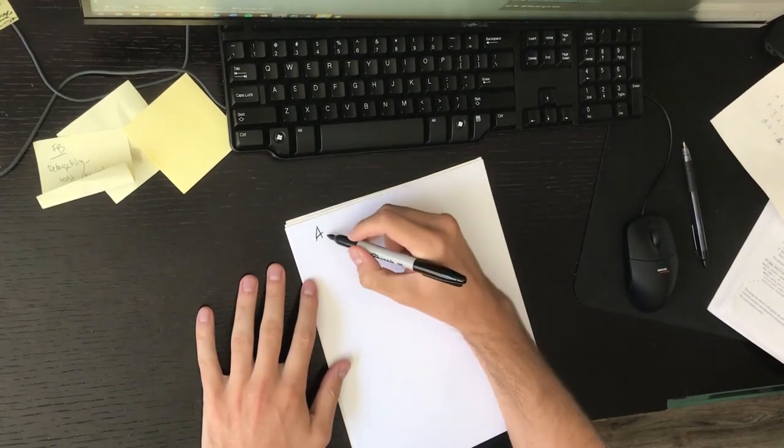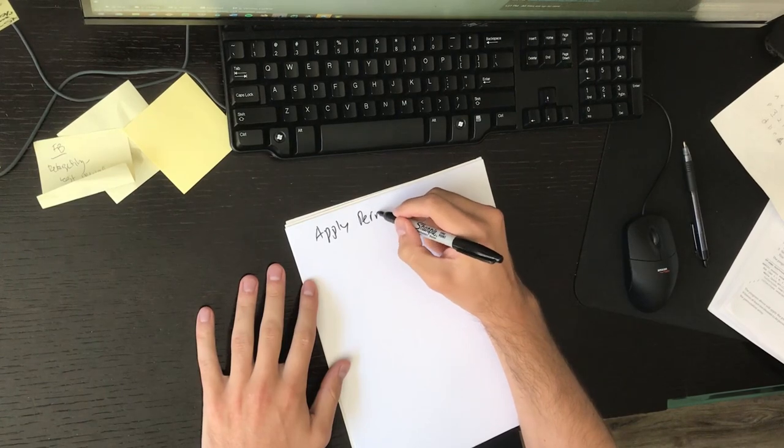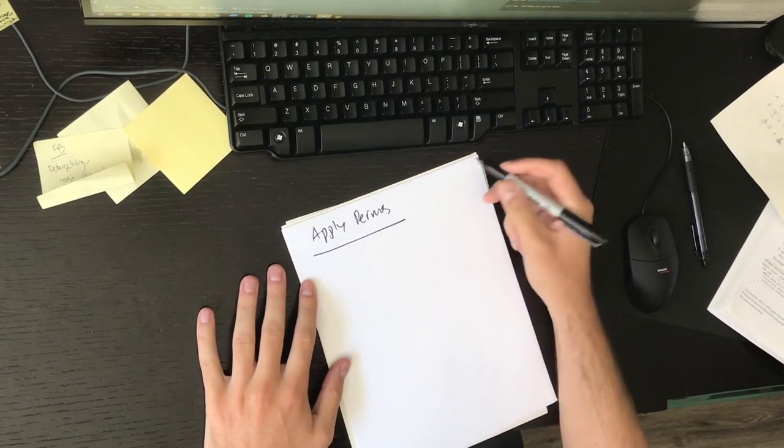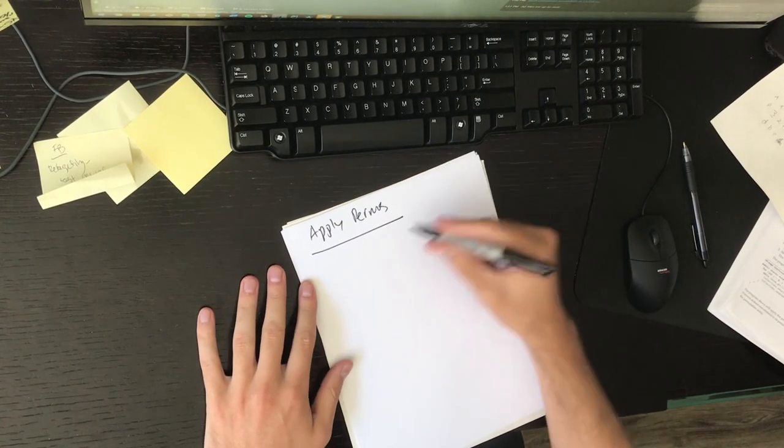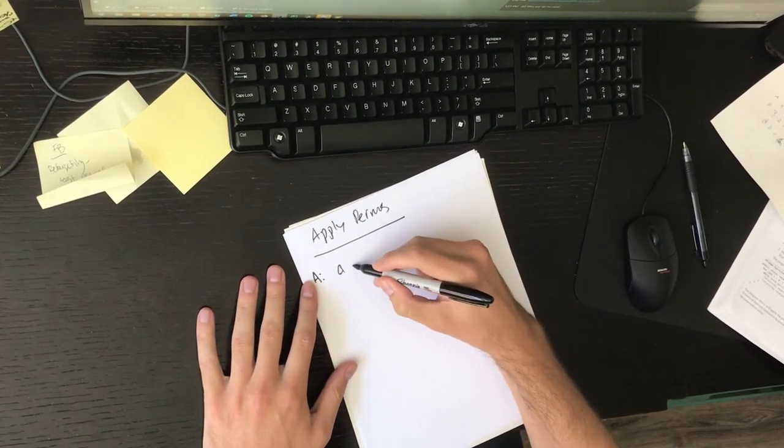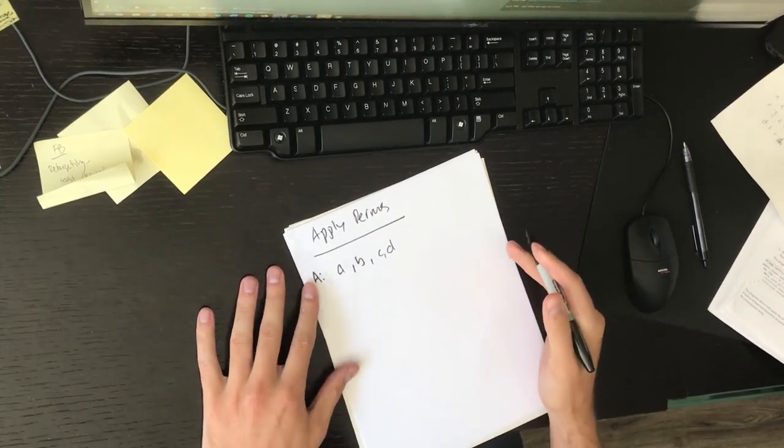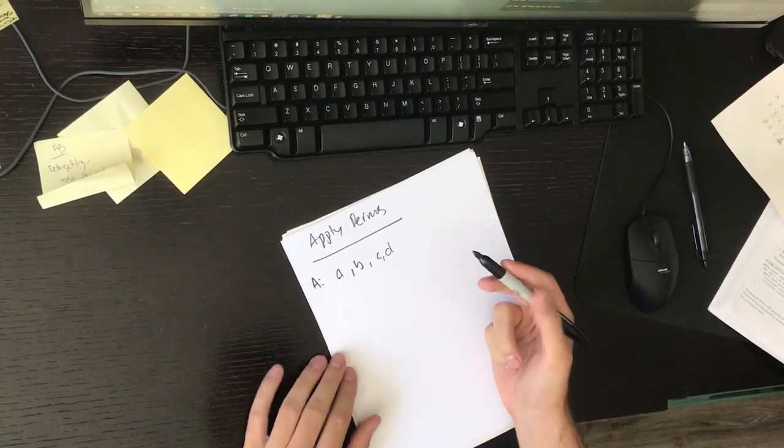All right, so this question is about permutations. We're just gonna call it apply permutations. And basically given a list, this A, so like A, B, C, D. This can be a list of anything, but we'll use characters for now.